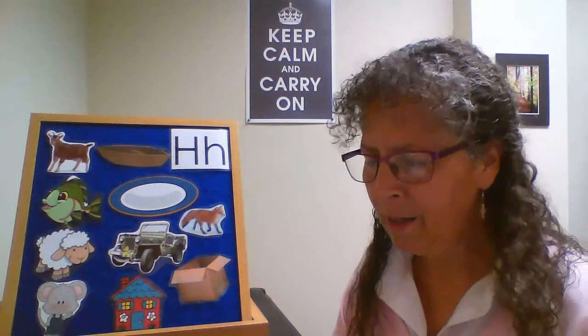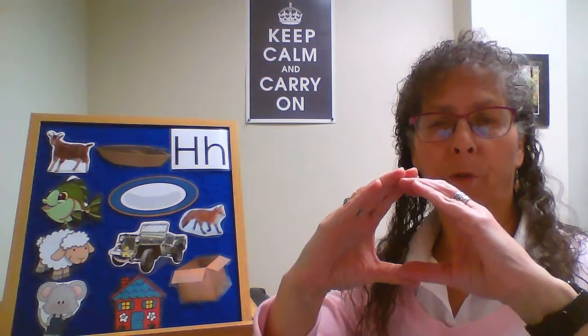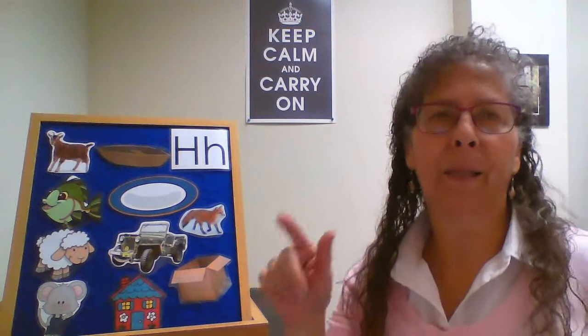Another extension activity for letter H is a poem about houses. Afterward, I'd have children count how many H words they heard. It goes: 'This is a nest for the robin, this is a hive for the bee, this is a hole for the bunny, and this is a house for me.'